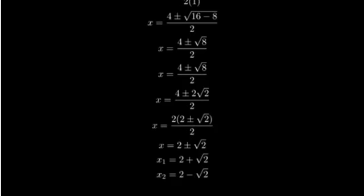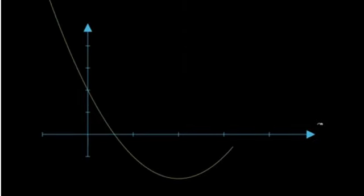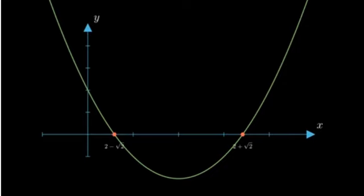To visualize these solutions, let's graph our quadratic equation. Here's the graph of y equals x squared minus 4x plus 2. The roots of this equation, which are our solutions, are where the parabola crosses the x-axis.